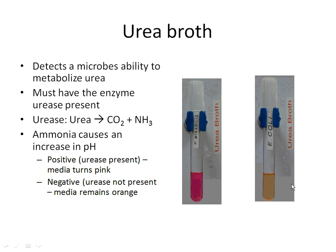With urea broth, we're looking for a change from the low pH of yellow to a very high pH of hot pink. During the metabolism of urea, an ammonia byproduct is produced, and ammonia has a very high pH. E. coli added to urea broth shows no change 24 hours later — it is still yellow, meaning E. coli did not use the urea. However, when Proteus mirabilis is added, 24 hours later we see a hot pink color because Proteus mirabilis broke down the urea, releasing the ammonia byproduct, causing an increase in pH.